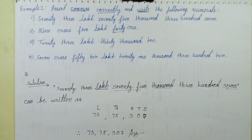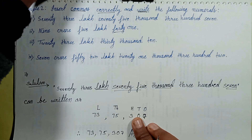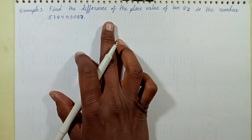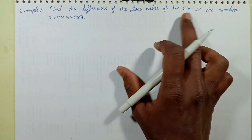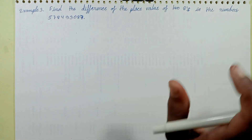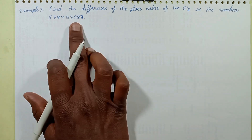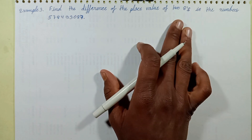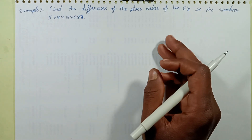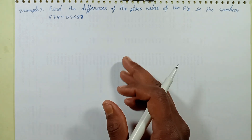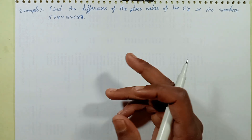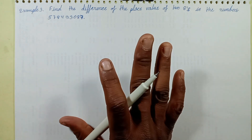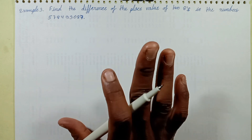Example three will find the difference of the place value of the two eights in a given number, discussing place value and face value. This will be discussed in the next video, next episode. Wait for the upcoming notification — thanks for watching this video.